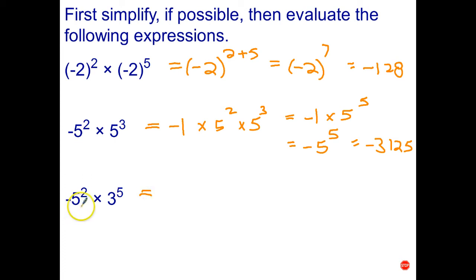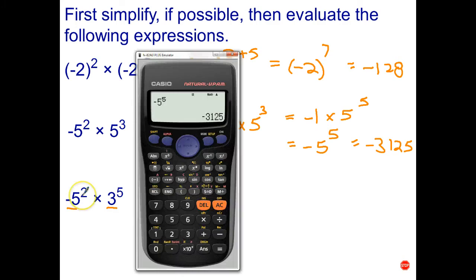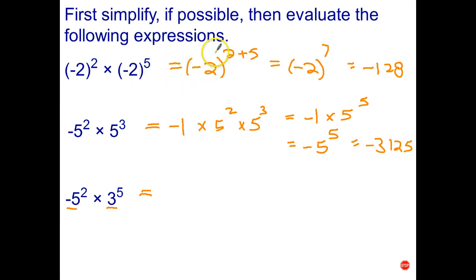With the last one, because the bases are not the same, we can't apply any index laws — all we can do is evaluate it. Using the calculator for negative 5 squared times 3 to the power of 5 gives us negative 6,075. So that video was a look at raising negative numbers to powers, which is important because it's easy to make mistakes — the brackets really do make a difference. In the next video we'll look at the second index law, which is a simplified way of dividing powers with the same base.